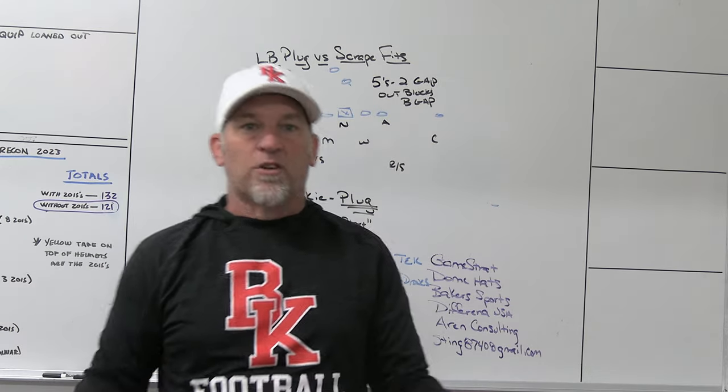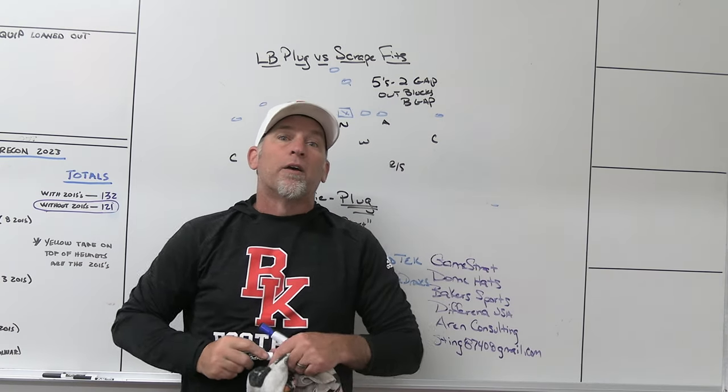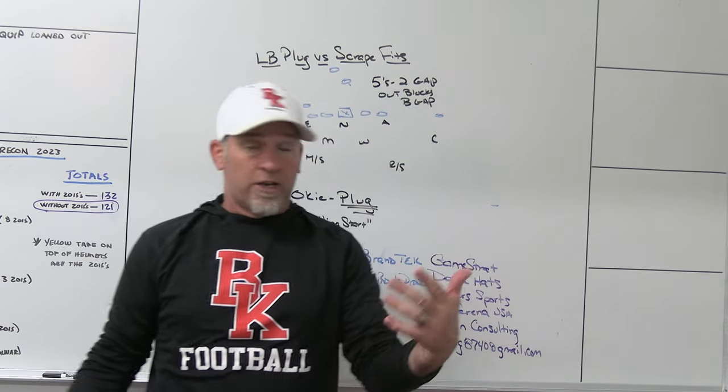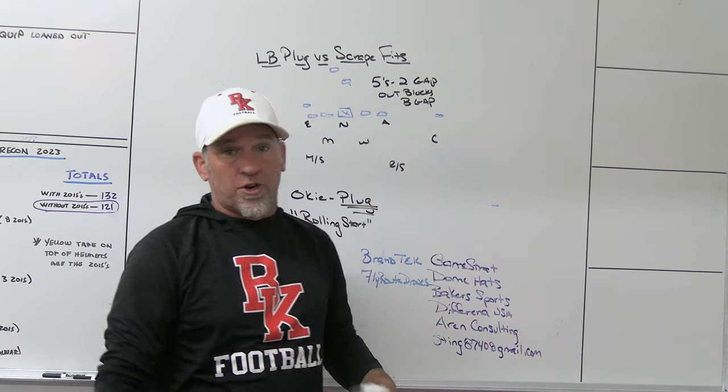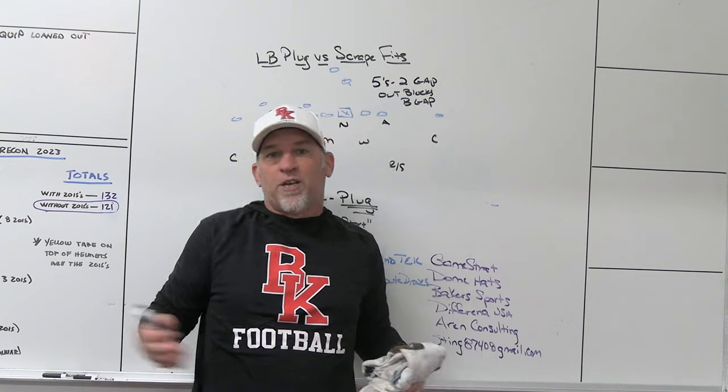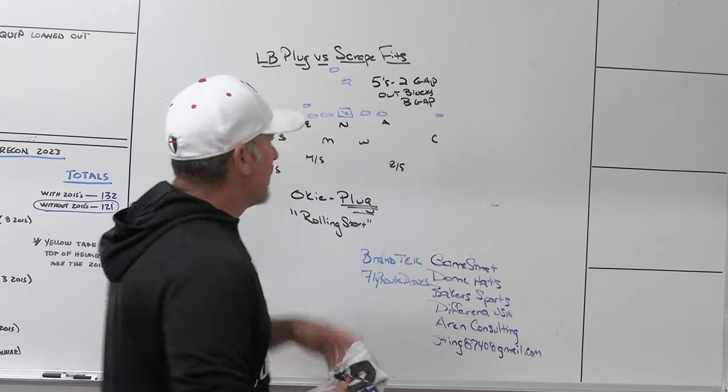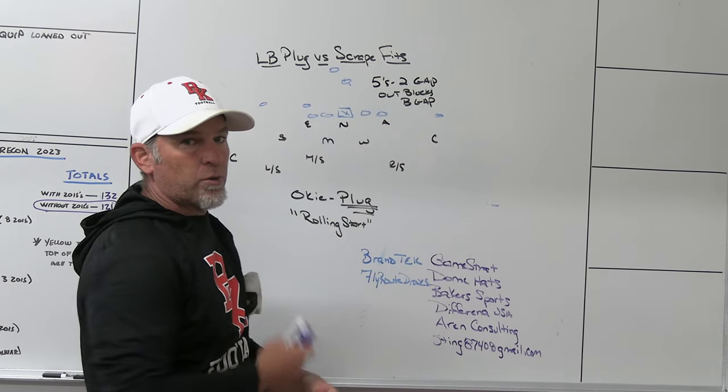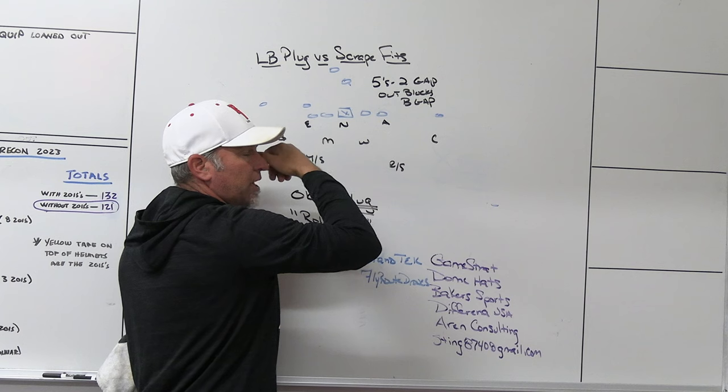So we want to be able to differentiate what is a plug fit, what is a scrape fit, because it's going to be two different deals for us. Now, because we're in five techniques then, it's going to be harder for us to eliminate inside gaps. So what we're going to have to do is our five techniques are going to have to be in essence, two gap players. And what that means is on out blocks, we got to be able to play the B gap. That's the only way we can get bodies where we need it. So that's how the five techniques fit into that scheme. Now, to me, philosophically, mentally, emotionally, that five technique is going to be more geared up to play than he is when he's in four eye. Guys have a hard time playing four eye. They feel like they don't make as many plays. They don't get as many highlights.